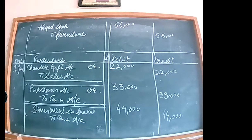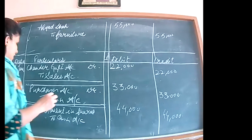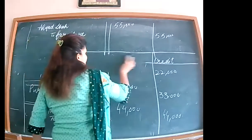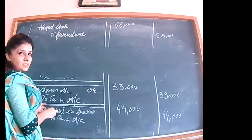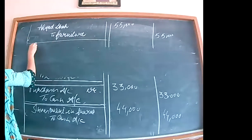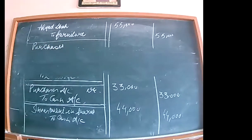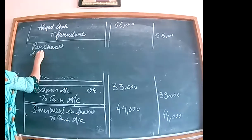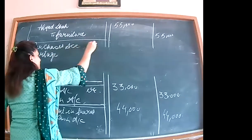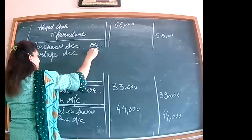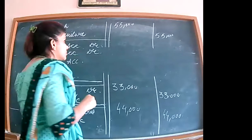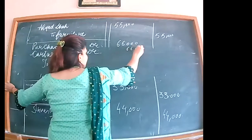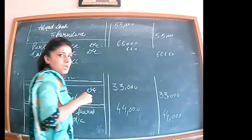Goods purchased for cash Rs. 66,000 and cartage paid at 1%. Cartage on goods is to be debited separately. Cartage = 1% of 66,000 = Rs. 660. Entry: purchases account debit and cartage account debit, to cash account. Total: 66,660. Narration: being goods purchased and cartage paid.